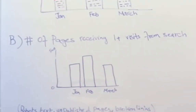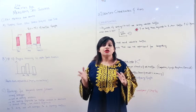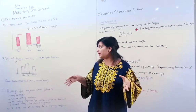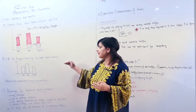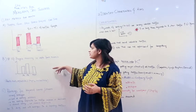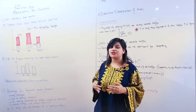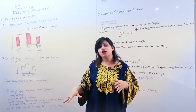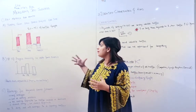The second metric is: what number of pages receive one or more visits? 'One plus' means that in the whole month, how many pages had one or more users visiting. You have to look at this over the whole month. If many pages are getting visits, that means those pages are ranking. In this graph, from January to February the number of pages increased, and from February to March it decreased.